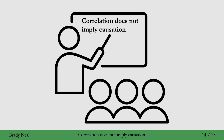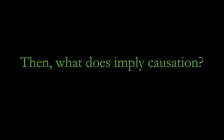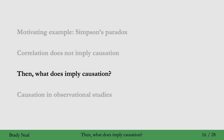So I've just told you that correlation does not imply causation. You've probably heard this several times before, but what does imply causation? So if we're doing causal inference, we have to answer this question, and that's what this section will be about.